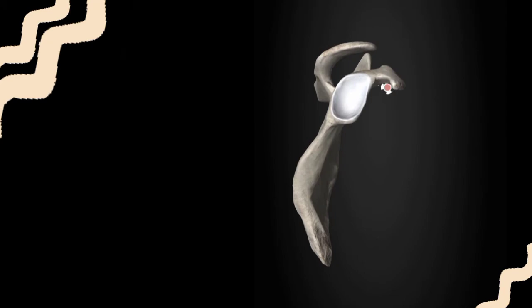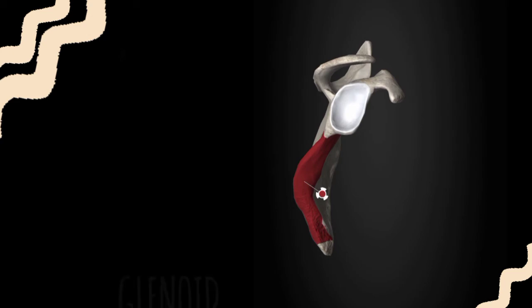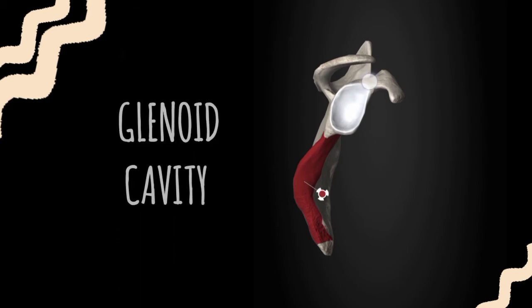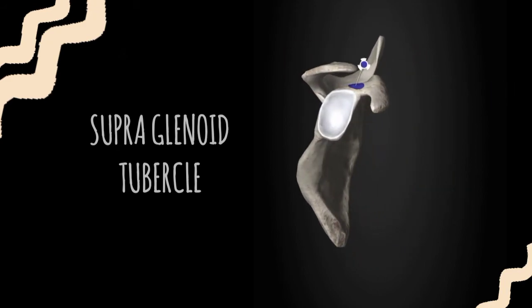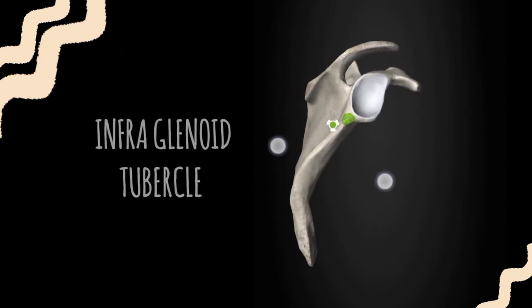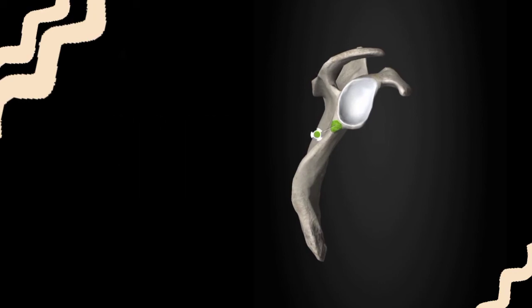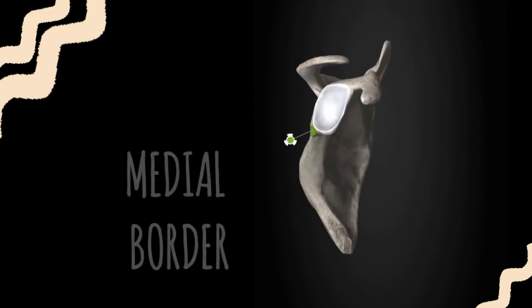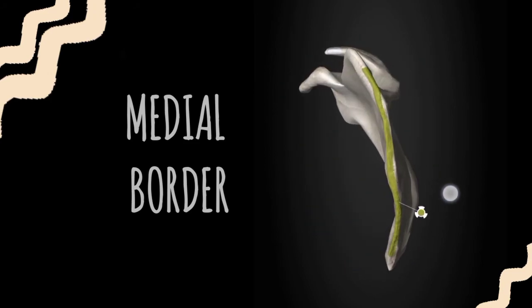The lateral border of the scapula has a glenoid cavity on the top. Just above the glenoid cavity is the supraglenoid tubercle, and just below it is the infraglenoid tubercle. So supraglenoid means above the glenoid cavity, and infraglenoid means below the glenoid cavity.